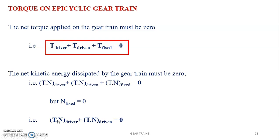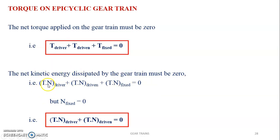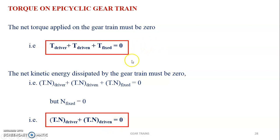The second expression is that the kinetic energy dissipated by the gear train must be zero. The kinetic energy on each gear is the torque multiplied by the speed of the gear. So: torque times speed of the driver, plus torque times speed of the driven, plus torque times speed of the fixed gear equals zero. Since the fixed gear's speed is zero, that term cancels out, leaving only the driver and driven terms.